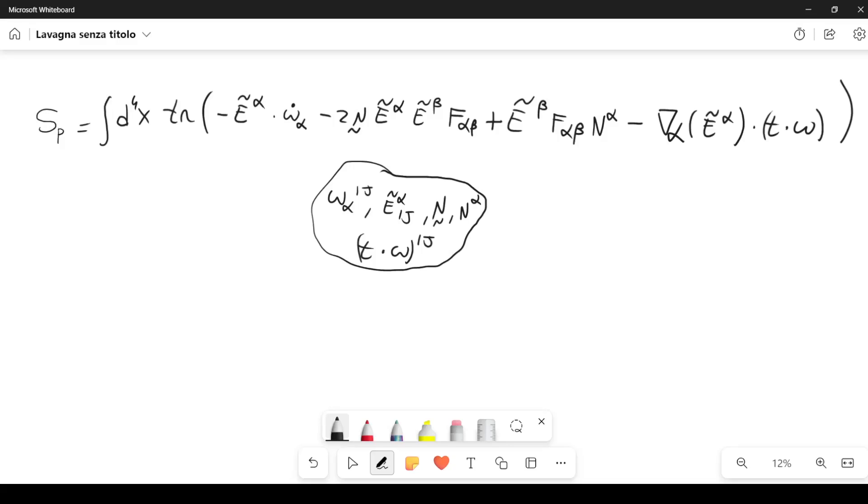We can make some considerations on holonomies and loops, starting from the Palatini action that I have rewritten here. You can also see that I have written down the variables which are present in the Palatini formalism, and what I'm going to do now is make some considerations.